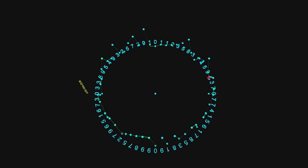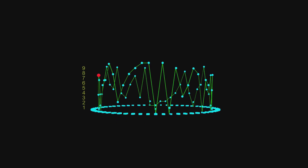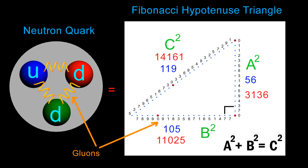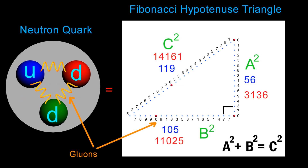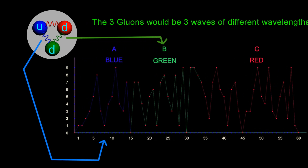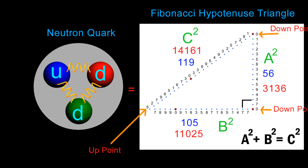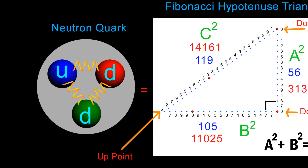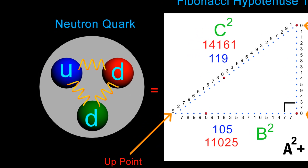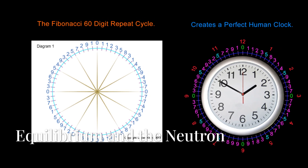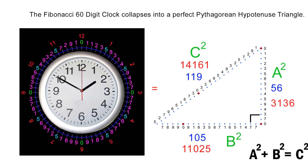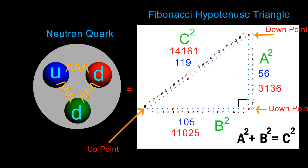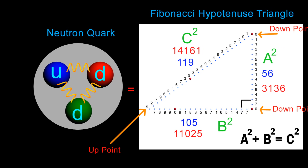In our last video, we saw that the Fibonacci 60-digit clock is actually a wave of coded mathematical electromagnetic information. Therefore, once it collapses into this hypotenuse triangle or neutron, you must imagine that those strands or gluons are not strings of numbers, but rather three strands of virtual mathematical energy or electromagnetic waves, which terminate in the three endpoints which science calls quarks. The neutron is neutral because it is still temporarily balanced — the square of the hypotenuse is equal to the squares of the other two sides.